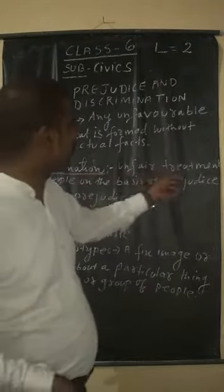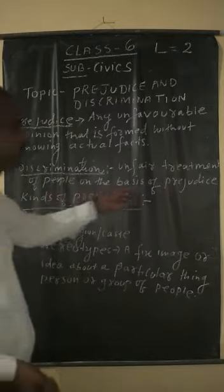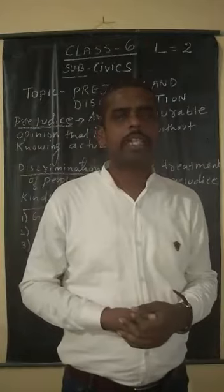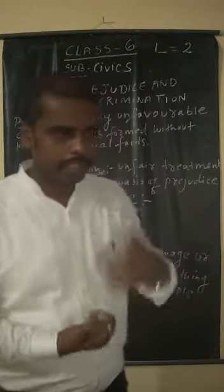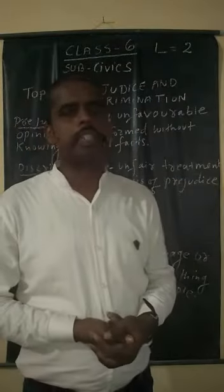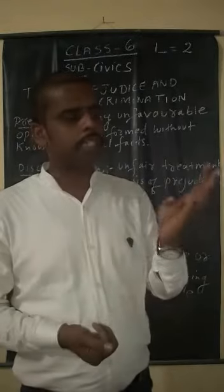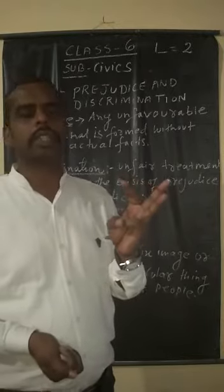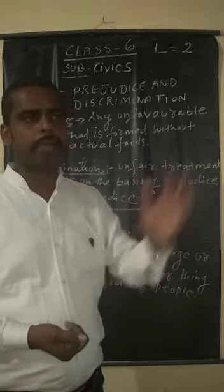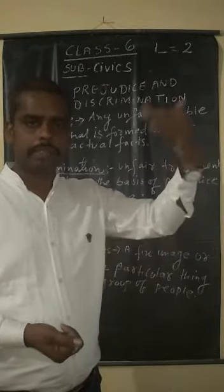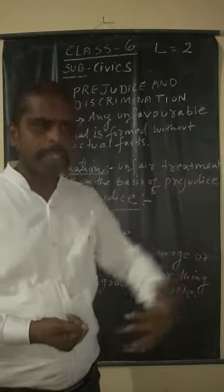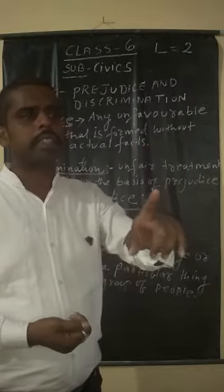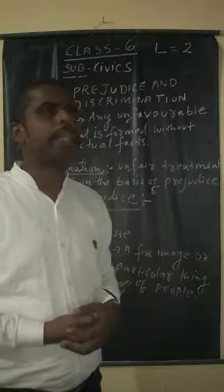The second one is discrimination, which means unfair treatment of people on the basis of prejudice. For example, in early history, you studied about the four Varnas in society: Brahman, Kshatriya, Vaishya, and Shudra. In the past, the upper three Varnas totally blamed and dominated the Shudras — the principle was 'might is right.' There was a caste-based discrimination system.